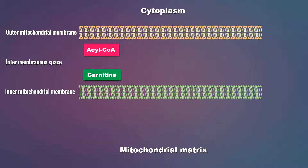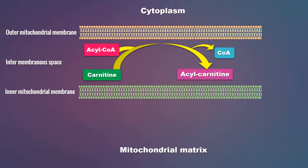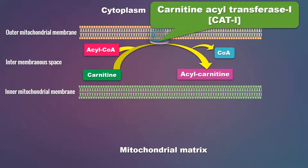The acyl-CoA — for example, if the fatty acid is palmitic acid, we can call it palmitoyl-CoA — combines with carnitine to form acyl-carnitine, and coenzyme A is released. This reaction takes place in the intermembranous space, between the two mitochondrial membranes. It is catalyzed by an enzyme attached to the outer mitochondrial membrane called carnitine acyl-transferase-1, or simply CAT-1. So the activated fatty acid, acyl-CoA, is converted to acyl-carnitine with the help of carnitine and CAT-1.